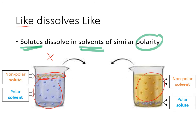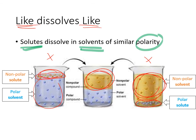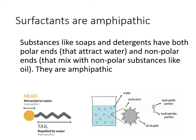In another beaker with a nonpolar solvent like oil and a polar solute, they also do not mix. But when you put the two beakers together, like dissolves like: the nonpolar solute and nonpolar solvent happily mix together, and the polar solute and polar solvent end up together because they are both polar. Nonpolar solute mixes with nonpolar solvent; polar solute mixes with polar solvent.